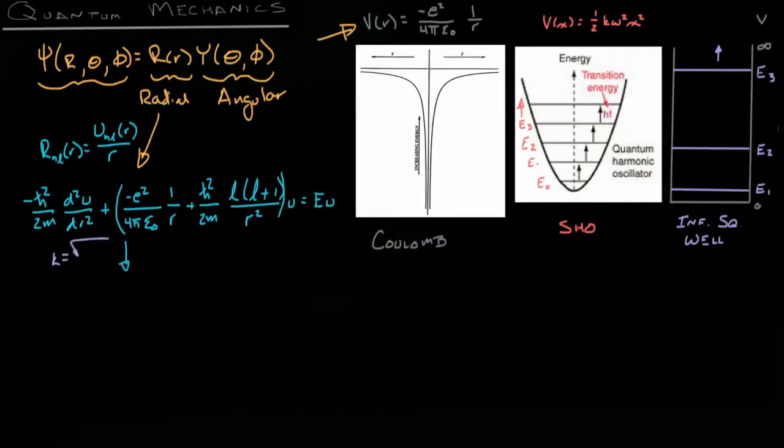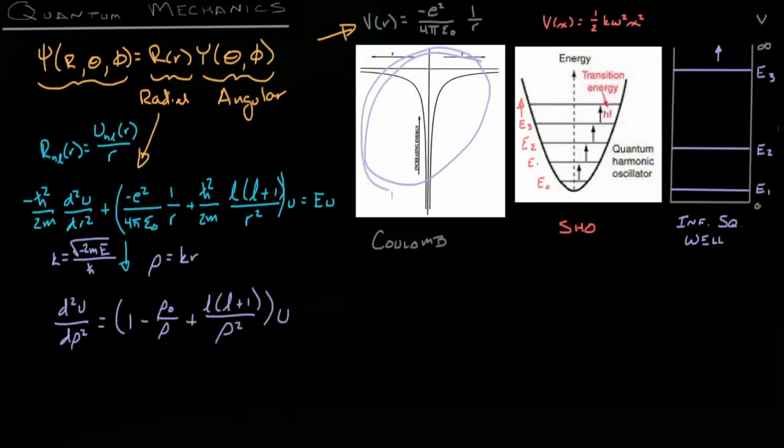Now, of course, finding solutions in this form of this equation is a headache. However, if we make the substitution of kappa, the square root of negative 2me over h-bar, and before you get too concerned that there's a negative under the square root, remember that the energy is always negative for the Coulomb interaction the way we've set it up here.